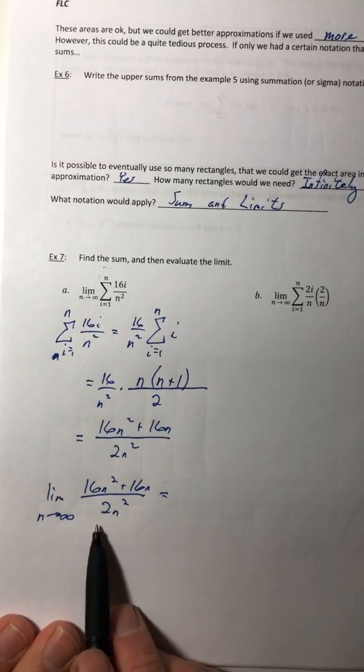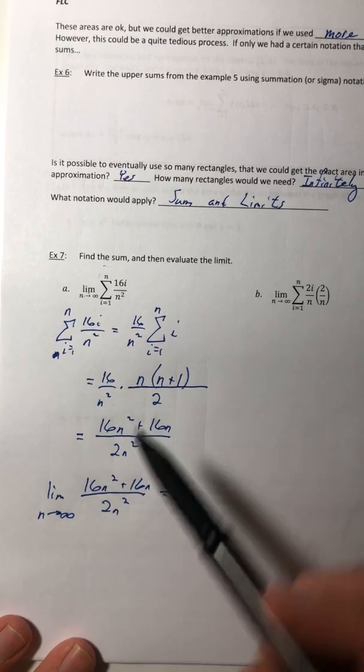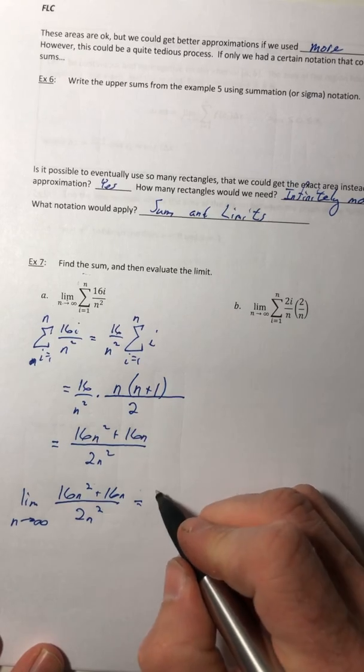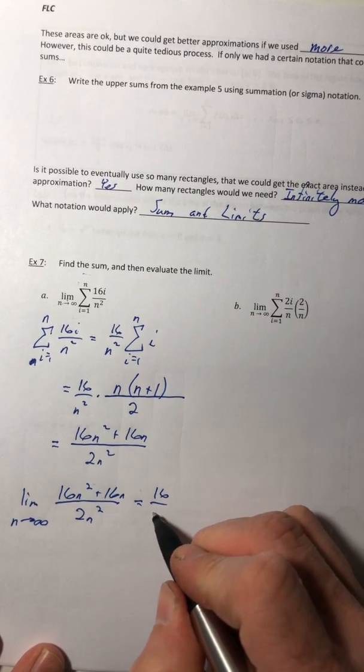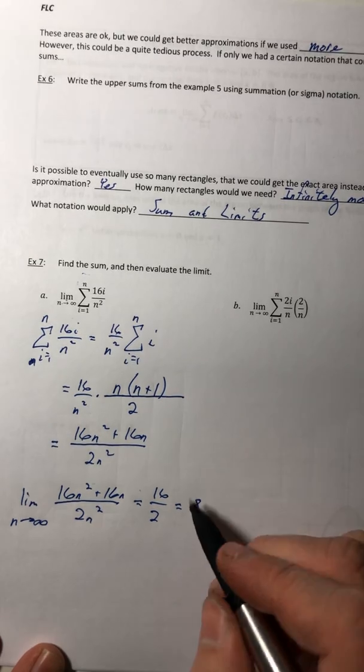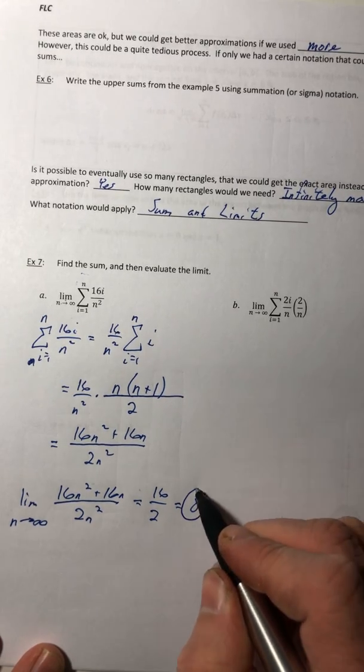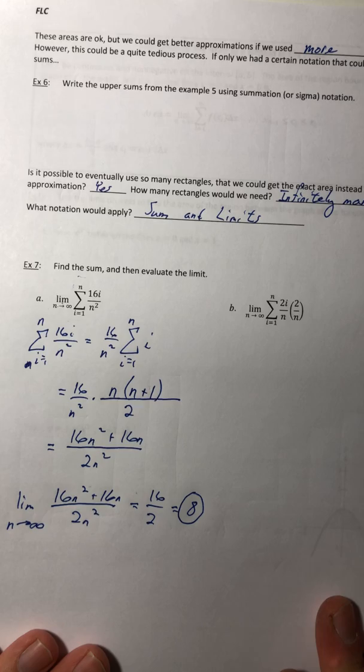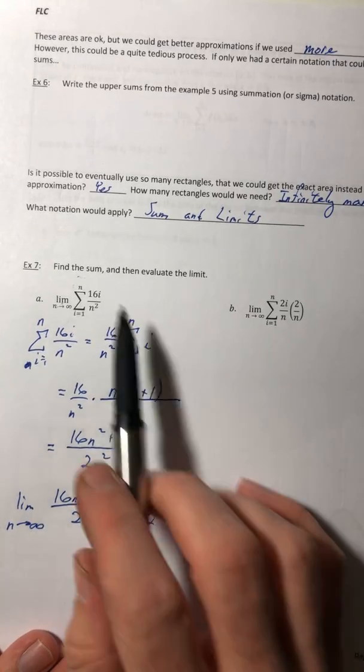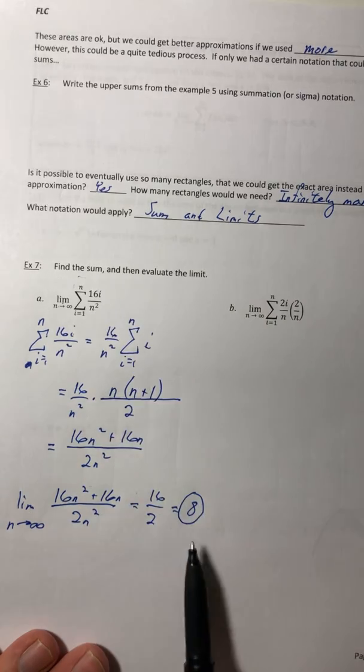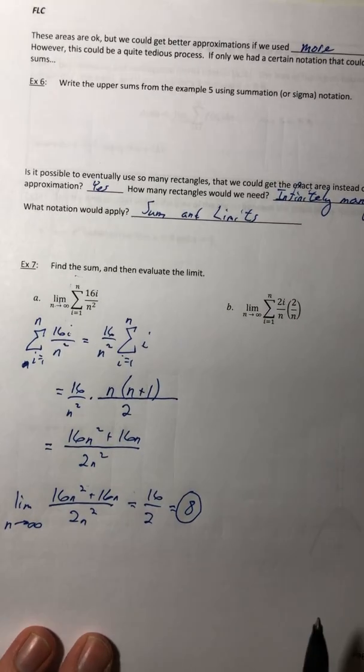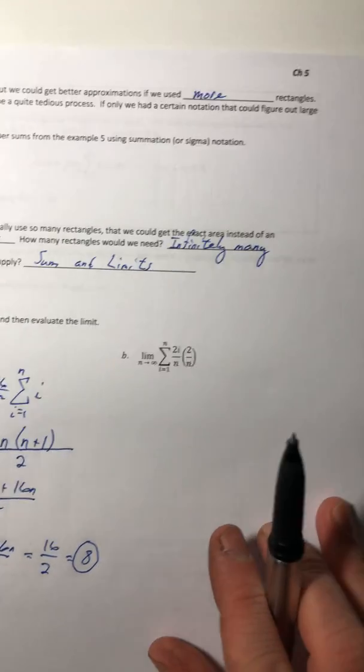If we evaluate this as n goes off to infinity, you've got equal degrees on the top and the bottom. So that is going to equal just 16 over 2, or 8. Which is really trippy. You just added up an infinite amount of things and the sum came out to 8.